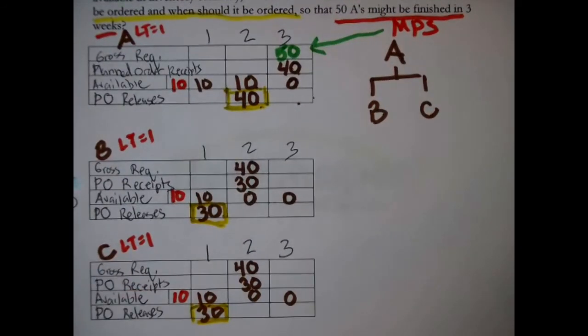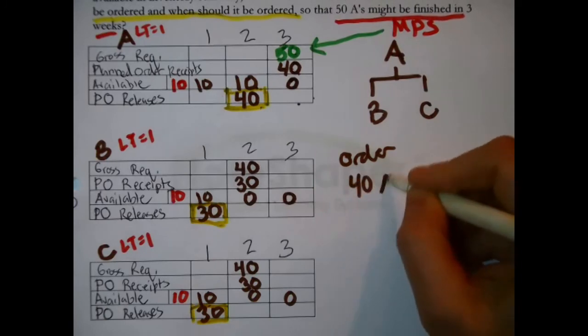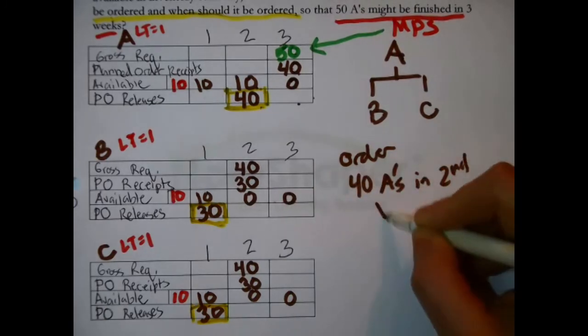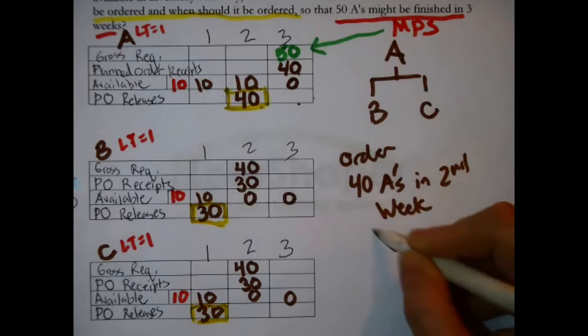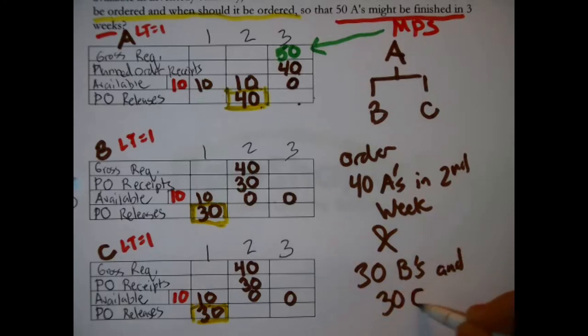How much of each item should be ordered and when should it be ordered so that the master production schedule is met? Answer, order forty A's in second week and thirty B's and thirty C's in first week.